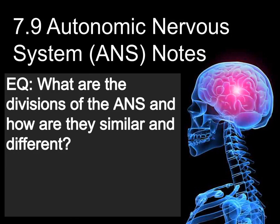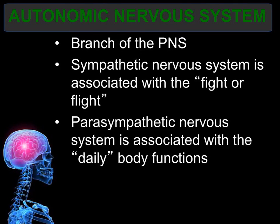This is 7.9 autonomic nervous system notes. The essential question is: what are the divisions of the autonomic nervous system and how are they similar or different? The autonomic nervous system is the branch of the peripheral nervous system and there are two divisions: the sympathetic division, associated with fight or flight in an emergency, and the parasympathetic division, associated with everyday daily functions.